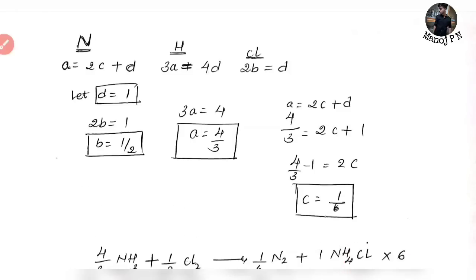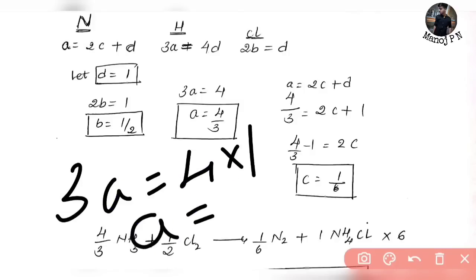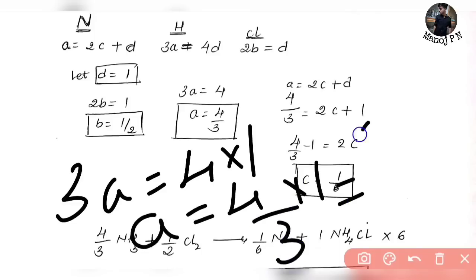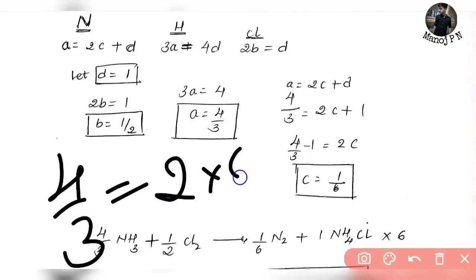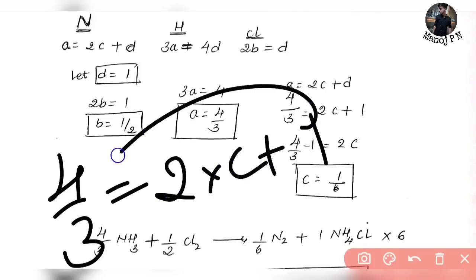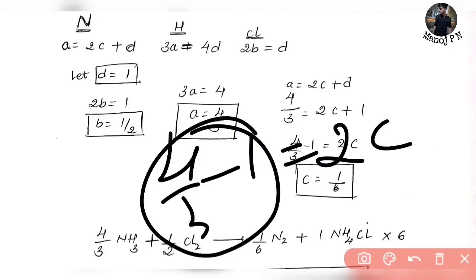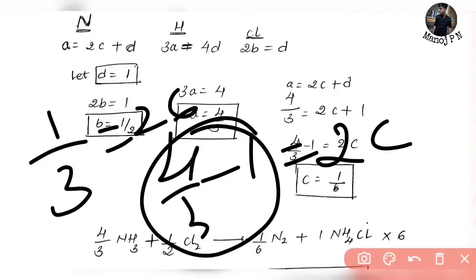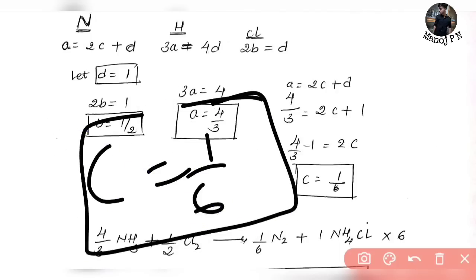Now if you know B value, B means 1 by 2. Next, 3A is equal to 4D — 3A is equal to 4 into D, and D is nothing but 1. So A is equal to 4 into 1 divided by 3, which is nothing but A is equal to 4 by 3. Now deriving the C value: A is equal to 4 by 3, so 2 into C plus D value — 1 is equal to 4 by 3 minus 1, which is equal to 2 into C. So 1 by 3 is equal to 2 into C, therefore C is equal to 1 by 6.